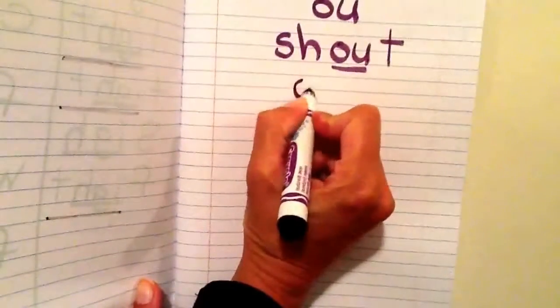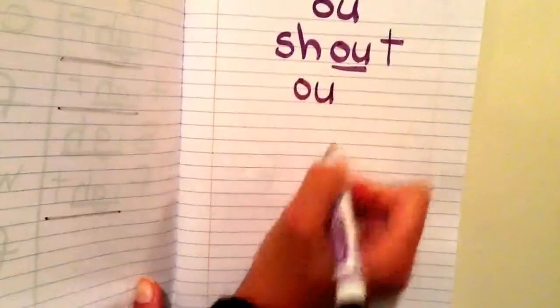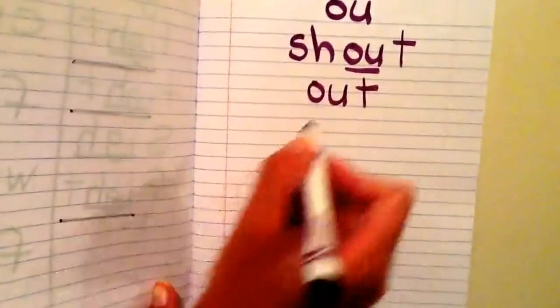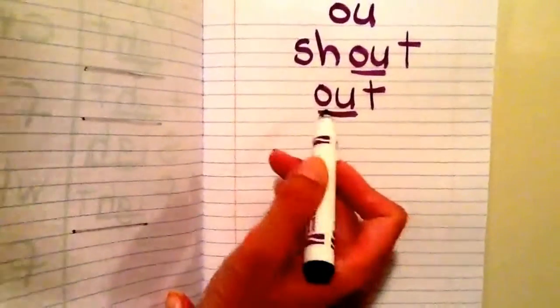Another word that has OU in it making the OW sound is the word OUT. So when I say that slowly, I hear OW, so I hear OU is OW. And then I hear T at the end — Timothy Tiger. So I'm going to put a T, and then I'm going to underline OU making the OW sound. Please write OUT in your word study notebook as O-U-T, and please underline OU.